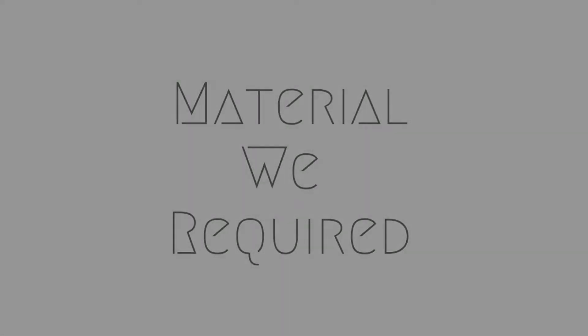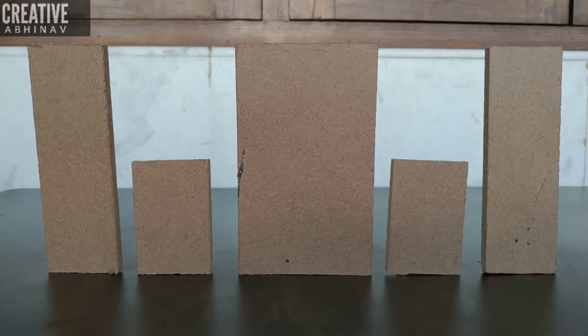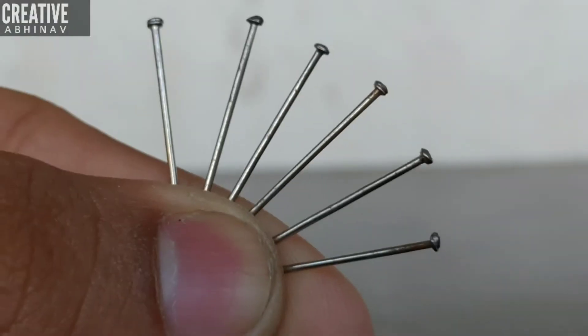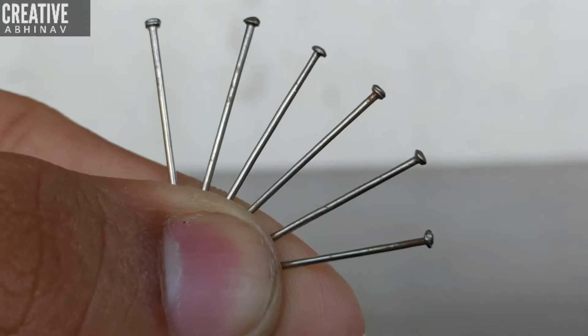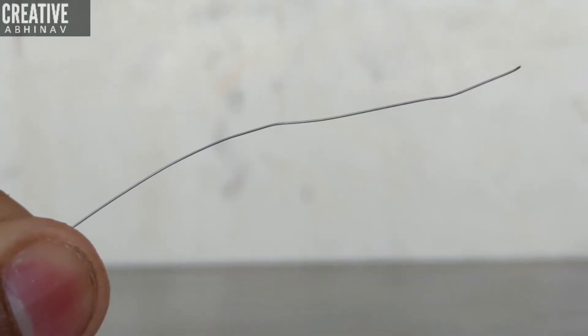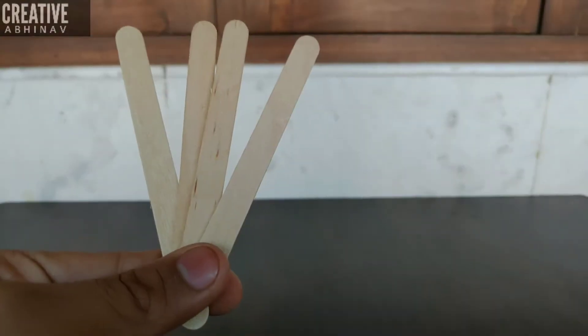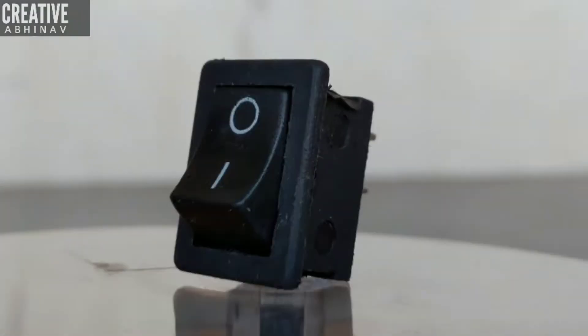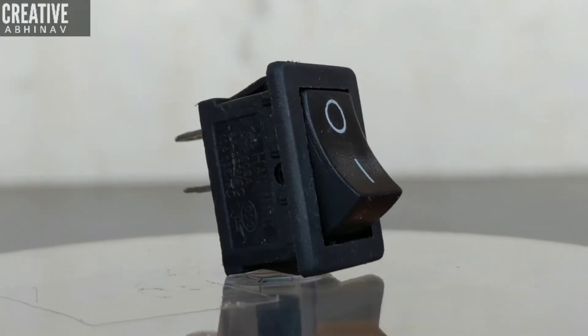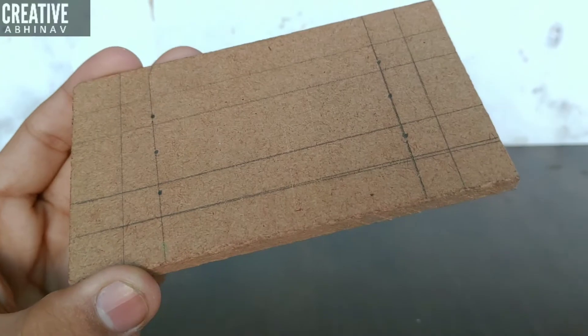Materials we require: some wooden pieces, dimension you can cut as your convenience, six pieces, metal pins, nichrome wire one meter, red and blue wires, ice cream sticks, on-off switch, and a piece of metal grill.